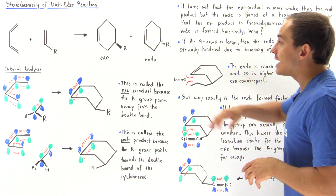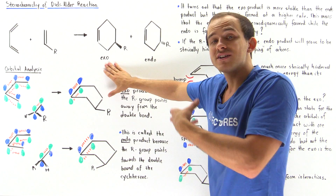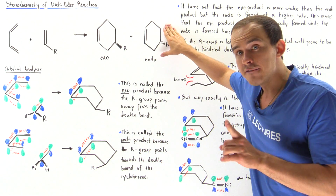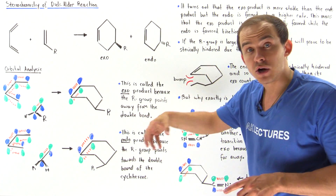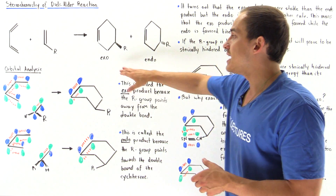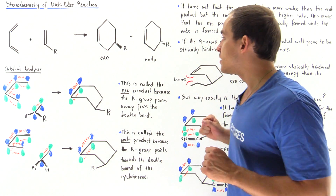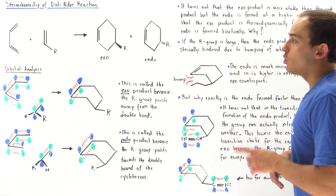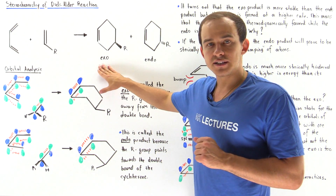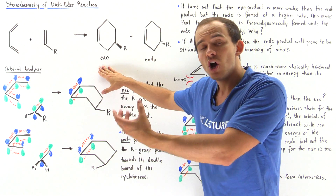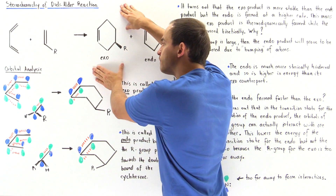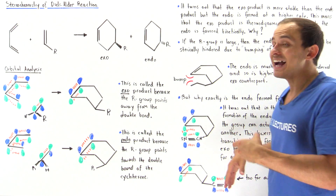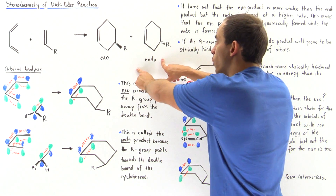It turns out that the exo product is more stable and lower in energy than the endo product. However, the endo product is formed much faster, at a higher rate than the exo. This means that under thermodynamic conditions — when the temperature is high enough and we have sufficient energy — the exo product is formed. But under conditions of low temperature, where kinetics are in control, the endo will form.